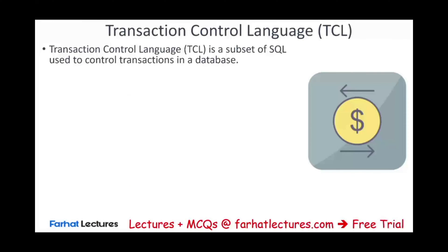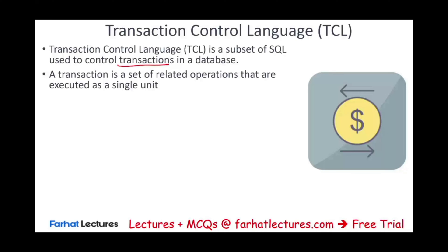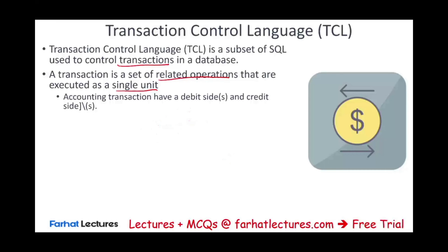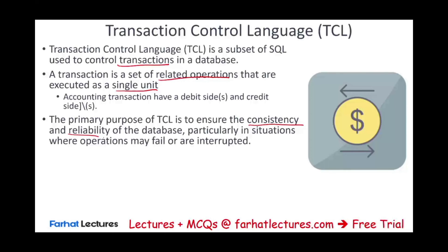Transaction control language is a subset of SQL used to control transactions that reside in a database. A transaction is a set of related operations executed as a single unit. For example, when processing a sale, many tables are affected — we debit accounts receivable, credit sales, debit cost of goods sold, and credit inventory. We want to ensure this single transaction is not interrupted, ensuring the consistency and reliability of the database, especially when an operation may fail or be interrupted.